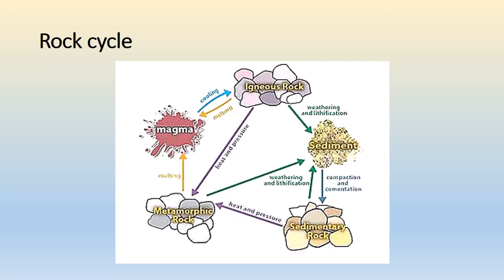Rock Cycle: Due to weathering and lithification, igneous rocks form sediments. These sediments are carried to the seabed by rivers. Dead particles of flora and fauna form sedimentary rock in the seabed over a long time period. Due to high pressure or temperature, sedimentary or igneous rocks can break down to form metamorphic rocks. Due to melting of metamorphic or igneous rocks, magma is formed again.